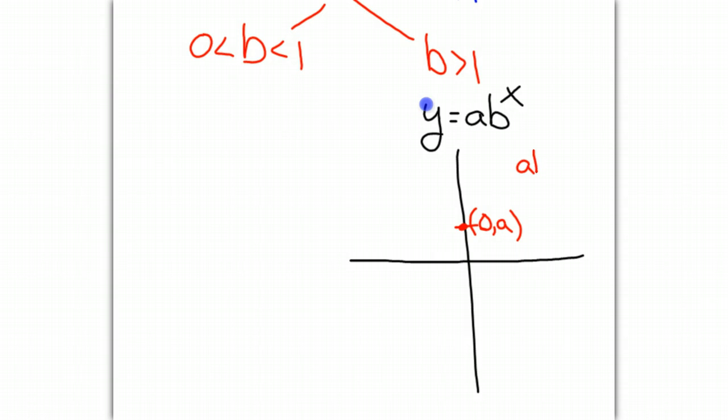Because if we put 0 in for x, we know that anything to the 0 power is 1, so y will equal a. That's how we get our y-intercept. We also know from our rules on exponents that it's impossible to take a positive number b and raise it to an exponent and have it become negative. So our graph will exist above the x-axis.